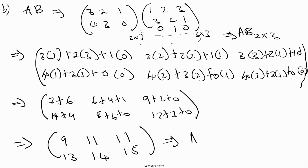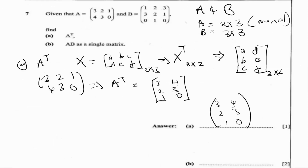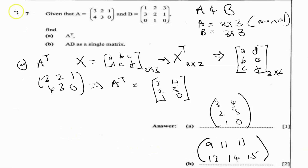So A times B equals the matrix with rows [9, 11, 11] and [13, 14, 15]. Awesome — we've solved these two questions! If you like the content, make sure you like and subscribe to the channel, and share it with others so we keep growing our community. Until next time, goodbye for now.